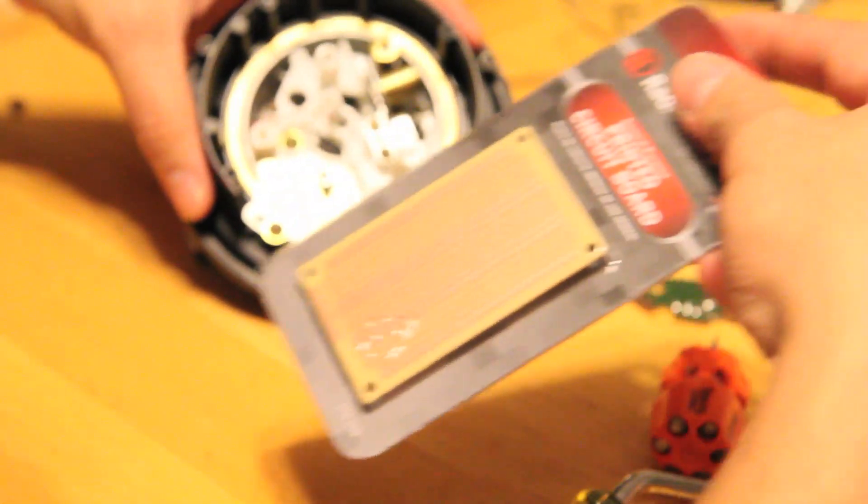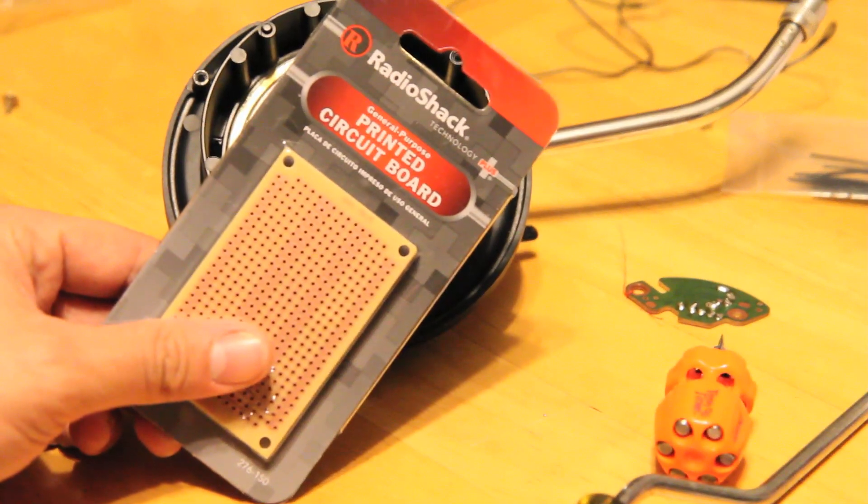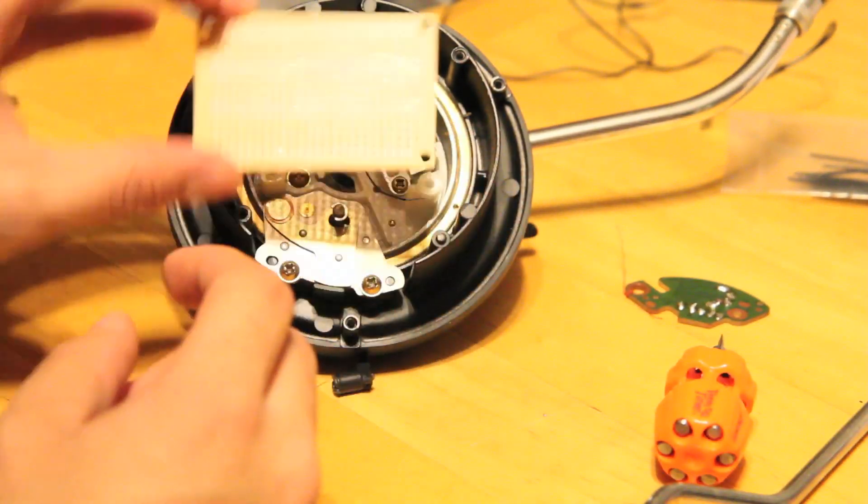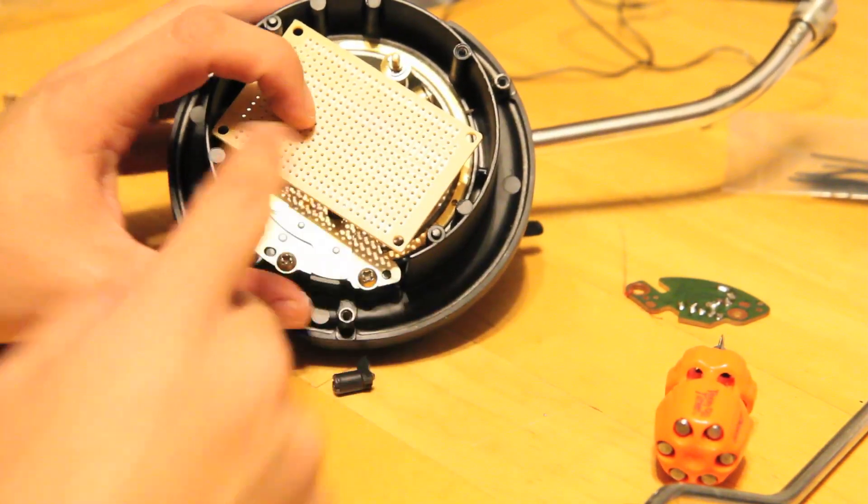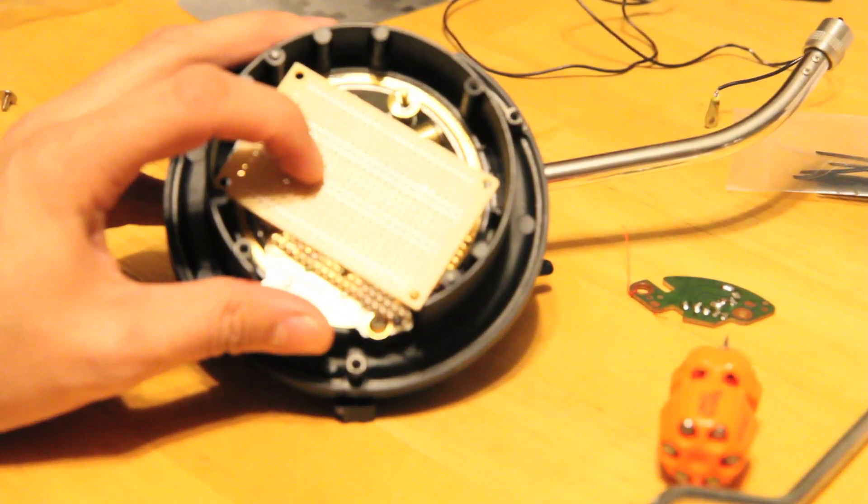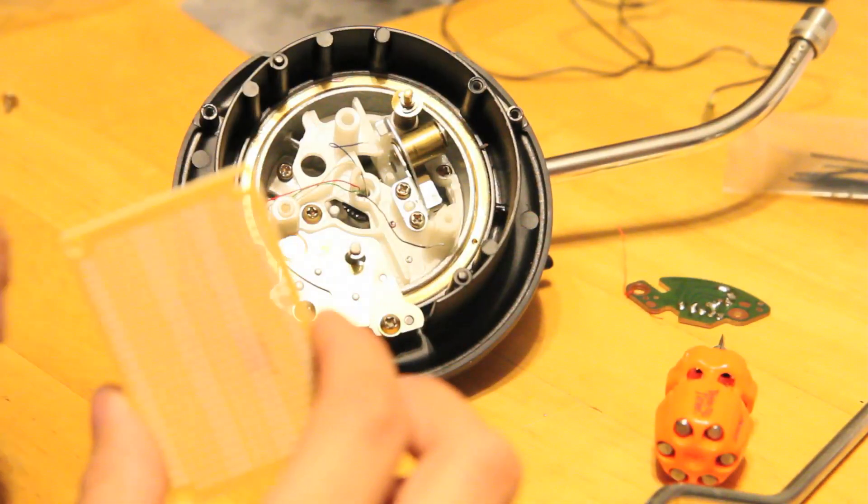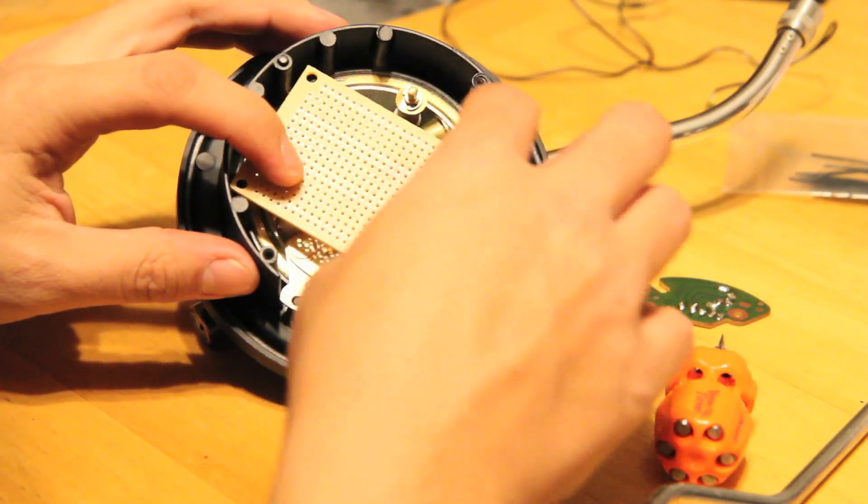First thing you're going to want, of course, is a Radio Shack pre-printed circuit board. Kind of draw on the other side what our circuit is going to look like. Essentially we're going to fit it in there. We're going to use actually all three mounting holes, so you may need another screw. We're going to use all three of them to get it to fit in.